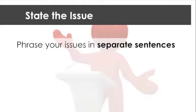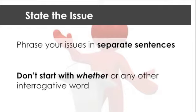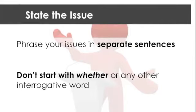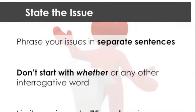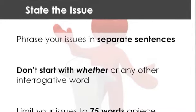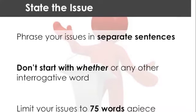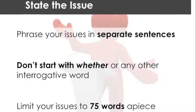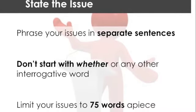Trying to squeeze it all into one sentence omits important information and can lead to unreadable issues. You want it to be readable but informative at the same time. Don't start with 'whether' or any other interrogative word. As a compromise between the single sentence and the rambling issue, limit it to 75 words apiece. About 98% of the time, if you can't phrase your issue in 75 words, you probably don't know what the issue is.